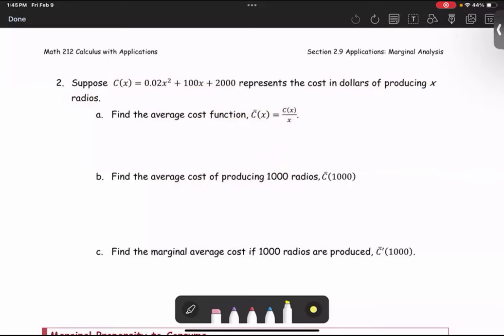For this example, C(x) = 0.02x² + 100x + 2000 represents the cost in dollars of producing x radios.